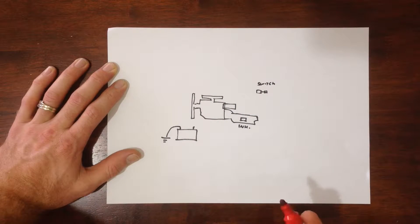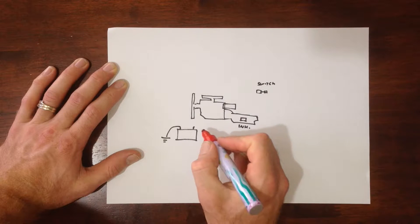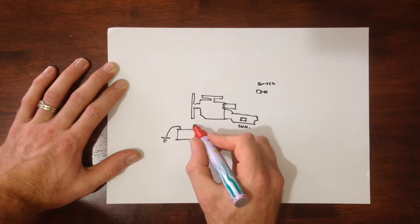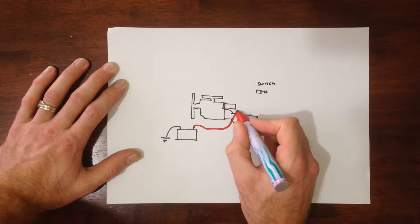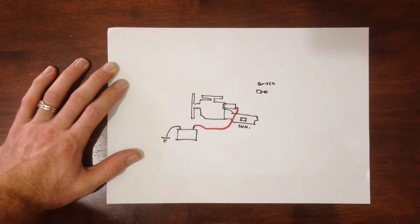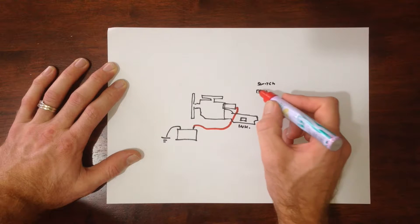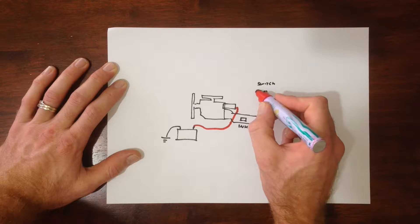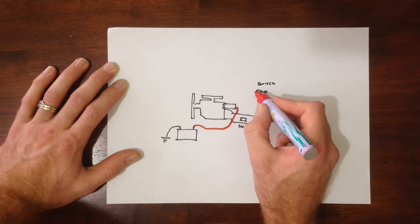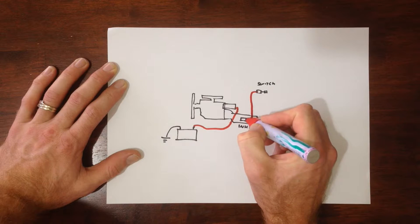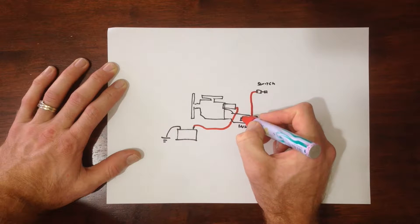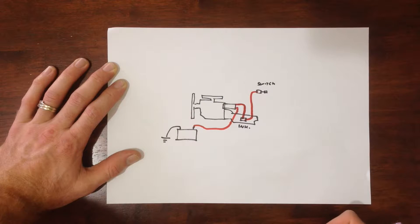So traditionally, the wiring comes all the way from the battery. It has a nice big permanent cable down to the starter. And then we have, from the ignition switch, all the way down. And if it's automatic, through the inhibitor, back out again, to the solenoid.